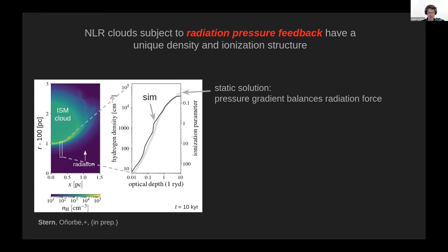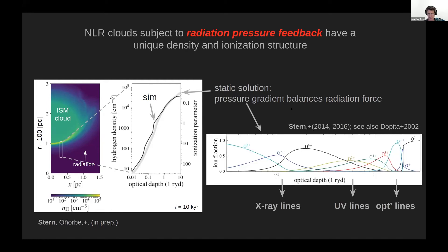Essentially you have a situation where the exposed surface layer of the cloud is being compressed on one side because it's absorbing radiation pressure from the quasar, but it can't accelerate because it's being compressed against the shielded back side of the cloud. Very quickly — on a timescale of 10,000 years, much smaller than any other timescale in the system — the surface layer reaches this quasi-equilibrium where the gas pressure gradient balances the force. This static solution was first calculated by Mike Kopita in 2002 and further developed in my work in 2014 and 2016.